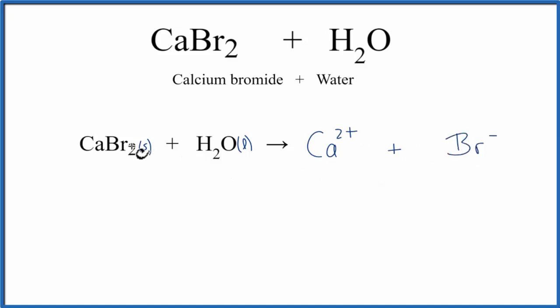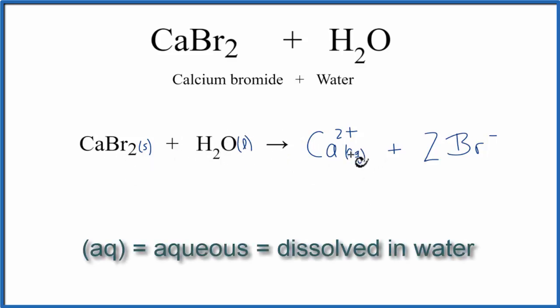Since we have this subscript of 2 here, we do need to put a 2 in front of the bromides, so that we have the same on each side of the equation. We can also write Aq after each of the ions, and that's because this is dissolved in water. Aq means aqueous, or dissolved in water.